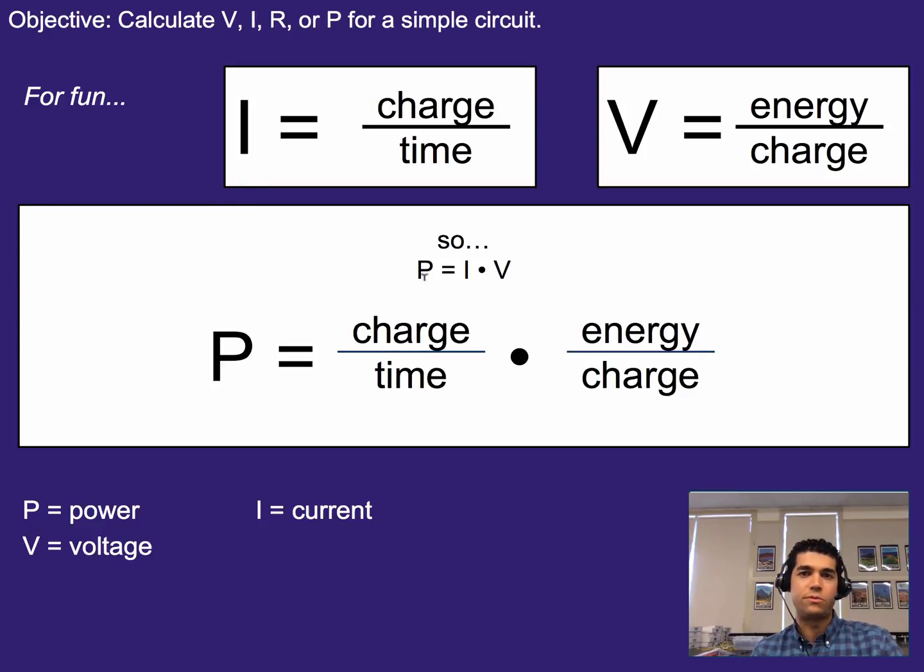So thinking about power for a second, if power is current times voltage, and current is charge divided by time, and voltage is energy per charge, then if we're multiplying these two things, what we get is charge over time times energy per charge.